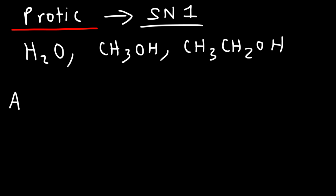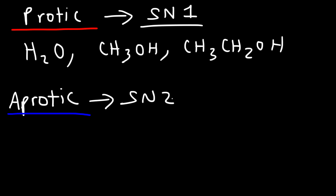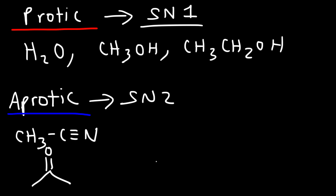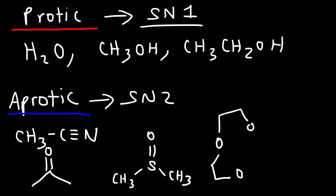Aprotic solvents — polar aprotic solvents — favor the SN2 reaction. Some examples of a polar aprotic solvent would be acetonitrile. As you can see, there are no OH or NH groups. Another example is acetone, or dimethyl sulfoxide, DMSO. Another example is a crown ether. These are some examples of polar aprotic solvents, and they work very well for SN2 reactions.